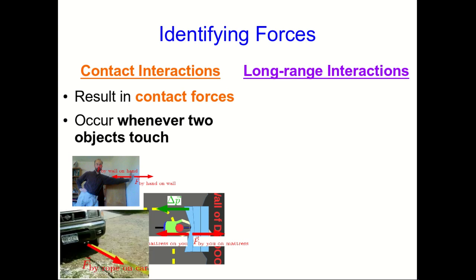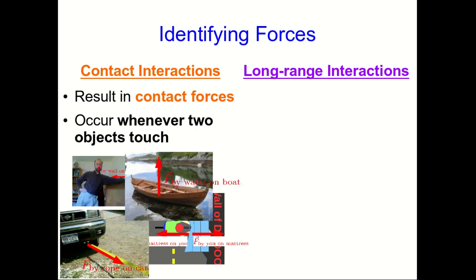Similarly, if you pull a car using a rope, then the rope exerts a force on the car. The car also exerts a force back on the rope, which I haven't shown. When a boat is floating on the water, it's touching the water. And so there must be a force that the water is exerting on the boat, and likewise, a force that the boat is exerting on the water.